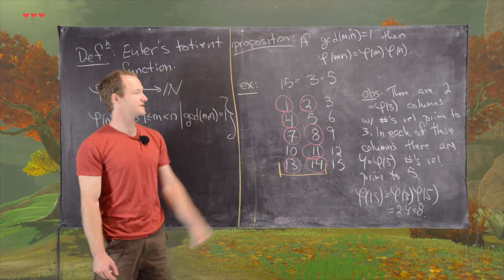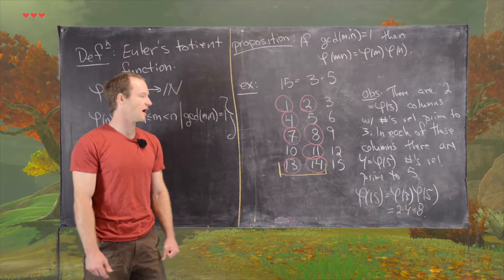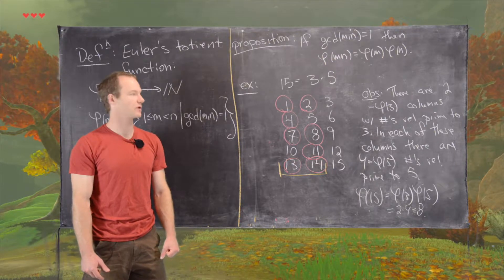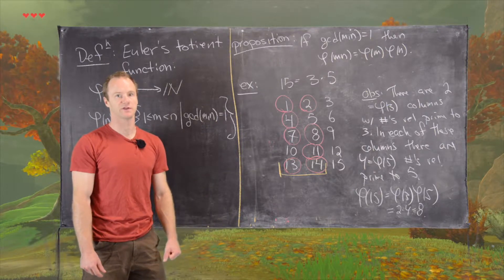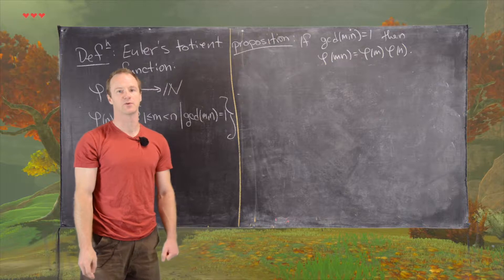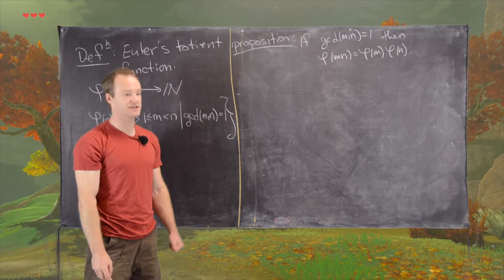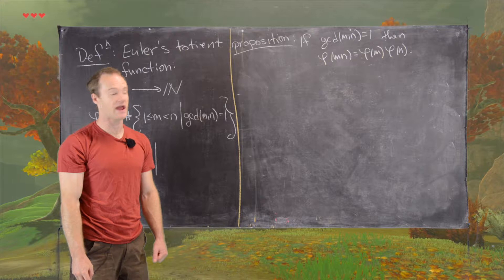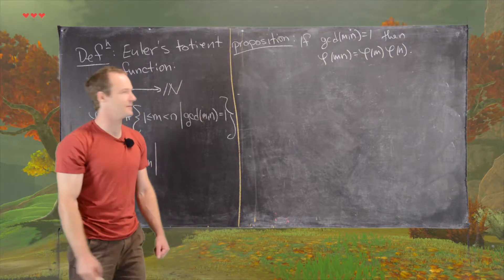Looking at this example is really informative because it gives us a method for producing a general proof. Now we are ready for the proof in general. As suggested by our example, we will look at an array of the numbers between 1 and mn.